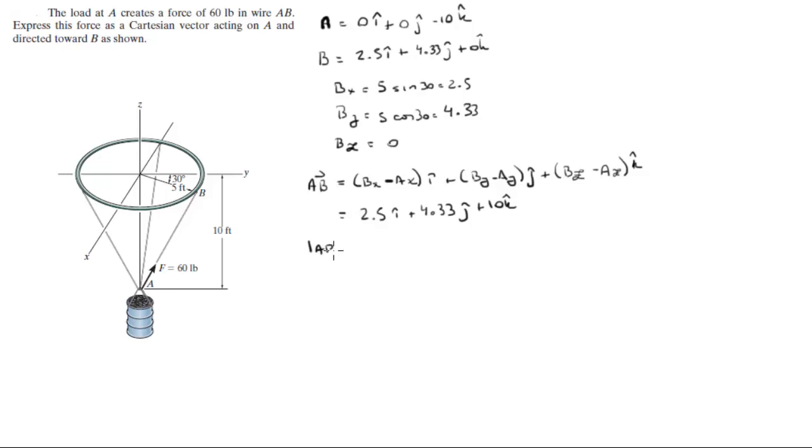Now we need to find the magnitude AB. To find the magnitude you do the square root of the x component squared plus the y component squared plus the z component squared. These three values, and when you plug those numbers into the equation above, you're going to get that it is equal to 11.2.